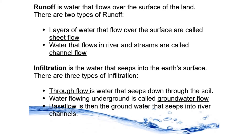We've got it here as well. Runoff is divided into two different types: sheet flow and channel flow. I'm not too concerned about the different types of infiltration. We just need to know that base flow is when the water joins into a river — we're going to look at that now.